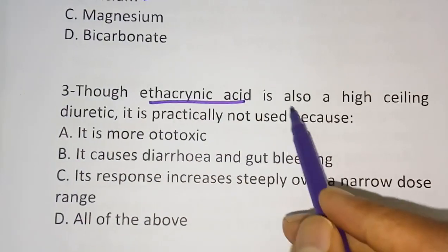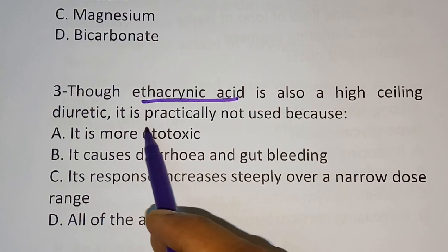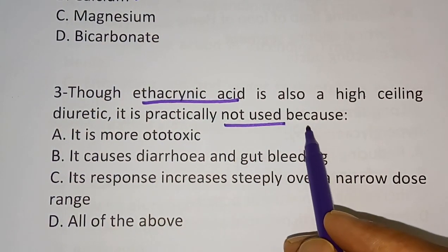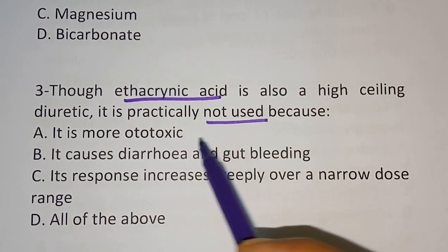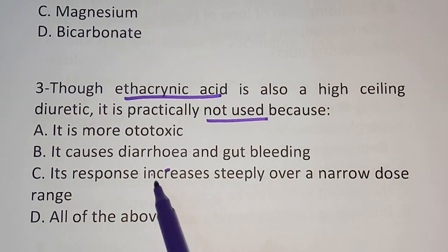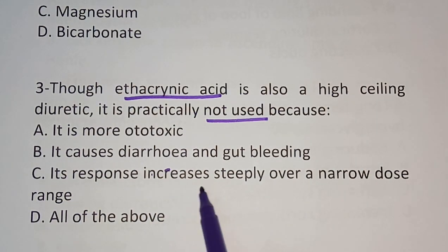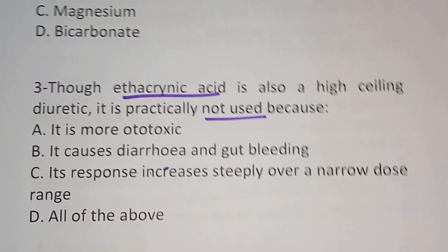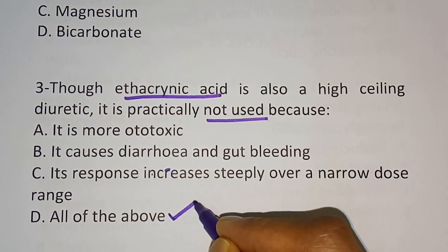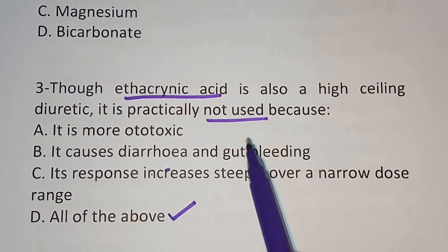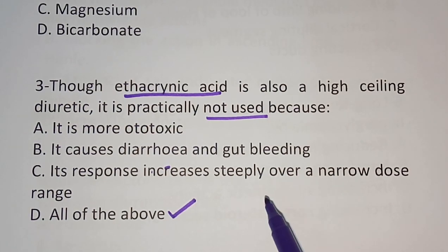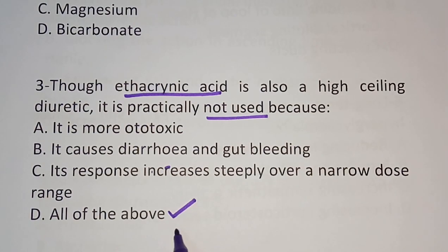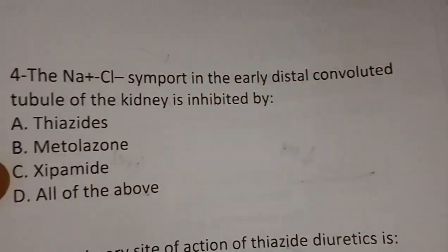Question number three: Though ethacrynic acid is also a high-ceiling diuretic like furosemide, it is practically not used. Why? Option A: It is more ototoxic. Option B: It causes diarrhea and gut bleeding. Option C: Its response increases steeply over a narrow dose range. Option D: All of the above. The correct answer is Option D — all of the above. Ethacrynic acid is not used because it is more ototoxic, causes diarrhea and gut bleeding, and its response increases steeply over a narrow dose range.